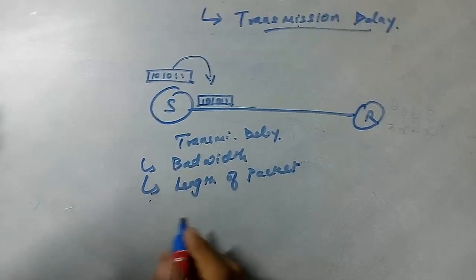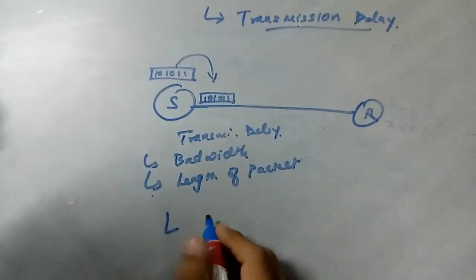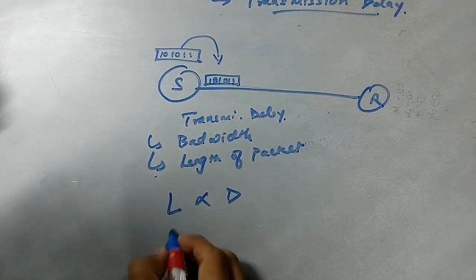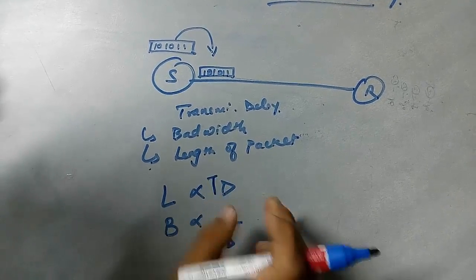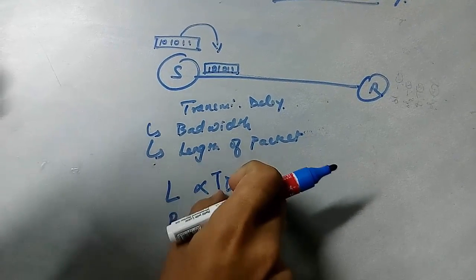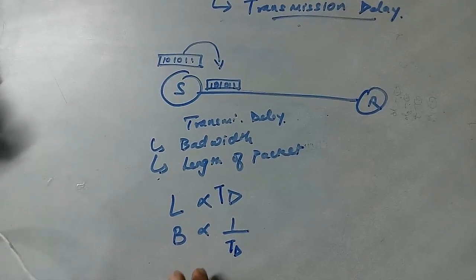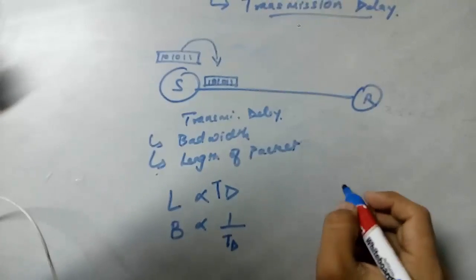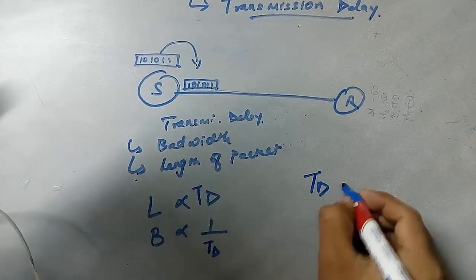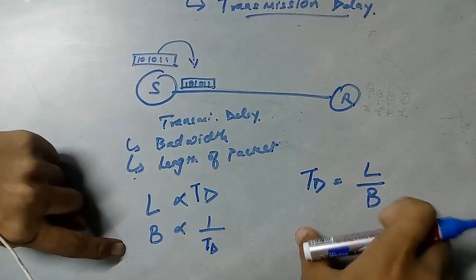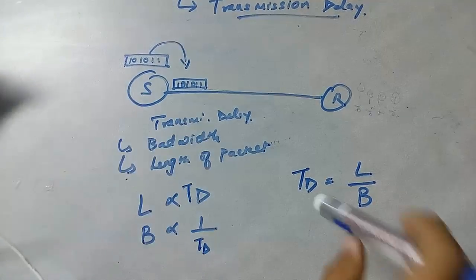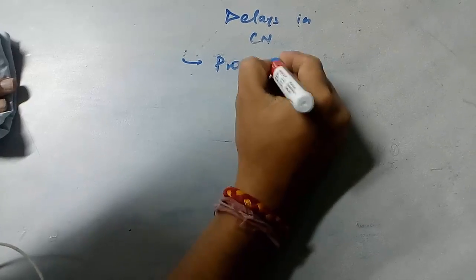More will be the length of the packet, more will be the delay. More will be the bandwidth, less will be the transmission delay. We represent transmission delay as TD. The general formula is: TD equals length divided by bandwidth, where length is directly proportional and bandwidth is inversely proportional.